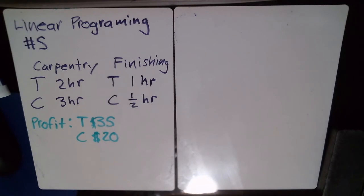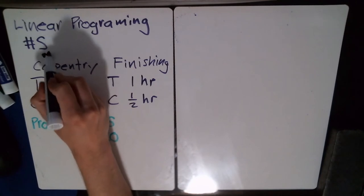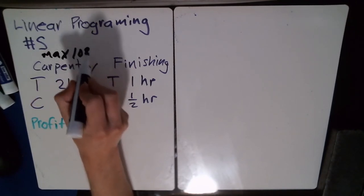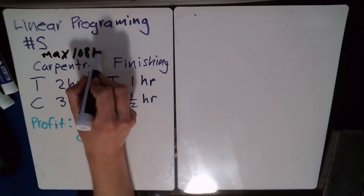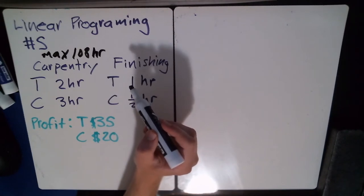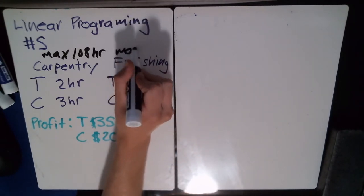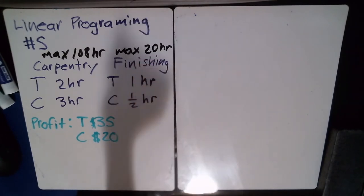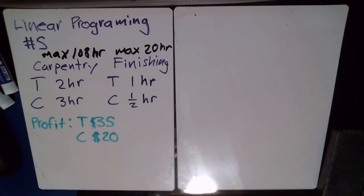The manufacturer's employees can supply a maximum of 108 hours of carpentry work per day, and the maximum finishing we can do is 20 hours per day. We want to know how many chairs and tables we should make each day to maximize our profits.